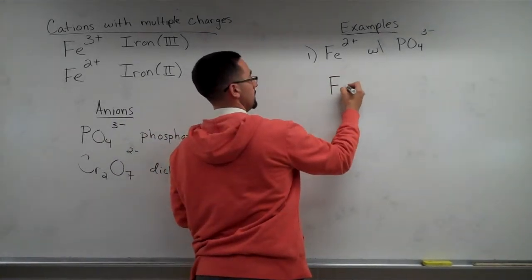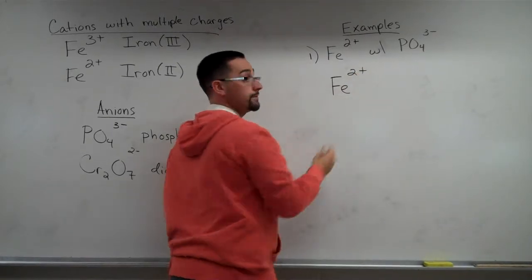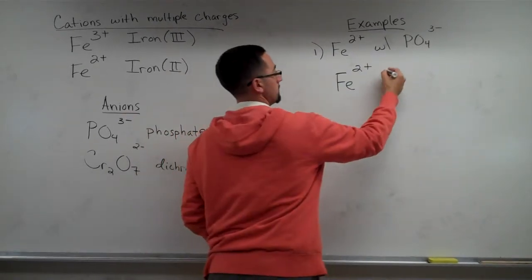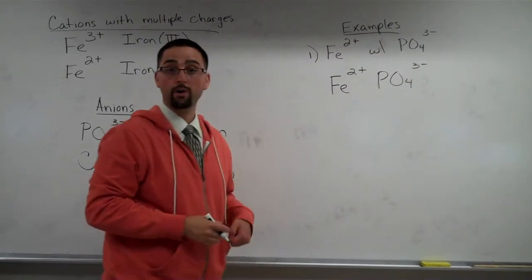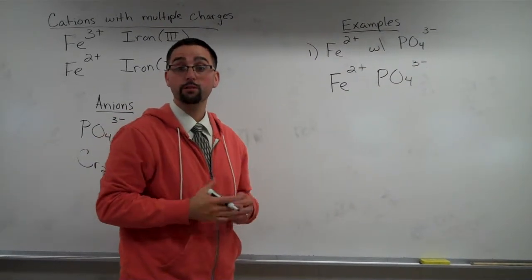So Fe 2 plus, or iron 2, and phosphate are going to get together and bond ionically, and they want to be electrically neutral.